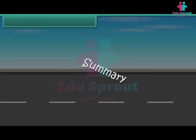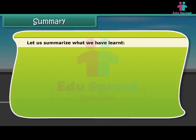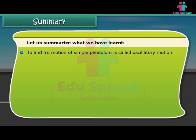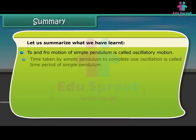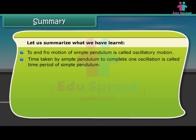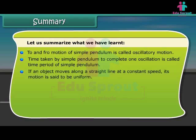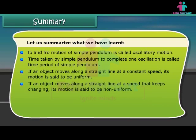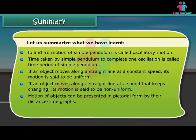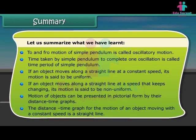Summary. Let us summarize what we have learned. To and fro motion of simple pendulum is called oscillatory motion. Time taken by simple pendulum to complete one oscillation is called time period of simple pendulum. If an object moves along a straight line at a constant speed, its motion is said to be uniform. If an object moves along a straight line at a speed that keeps changing, its motion is said to be non-uniform. Motion of objects can be presented in pictorial form by their distance time graph. The distance time graph for the motion of an object moving with constant speed is a straight line.